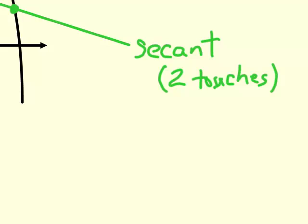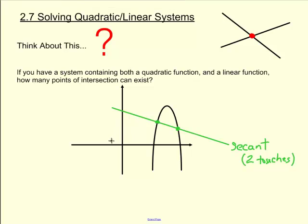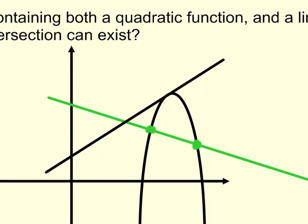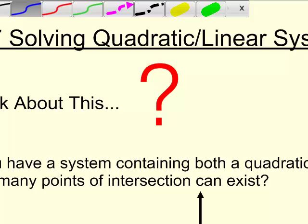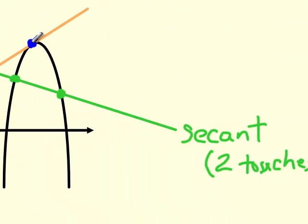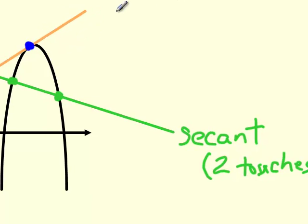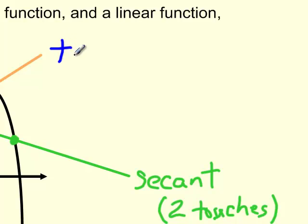It's also possible for us to have a line that just grazes the parabola. Let's say we had a line that came through just like this and just grazed the parabola right there. This would only have one point of intersection. We say that this type of line is tangent to the parabola, which means it touches but only touches once.